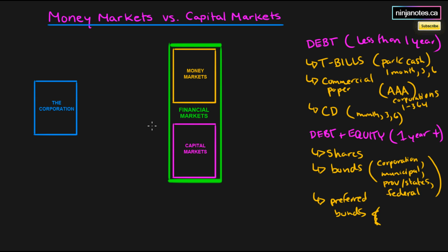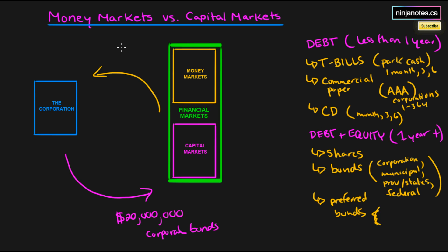Alternatively, a corporation can invest in the capital markets by purchasing long-term bonds. For example, if the corporation has $20 million with nothing immediate to do with it, it could invest in corporate bonds to receive interest over the long term. In return, it receives a certain number of bonds plus a fixed amount of interest, payable semi-annually or annually depending on what the coupon specifies.